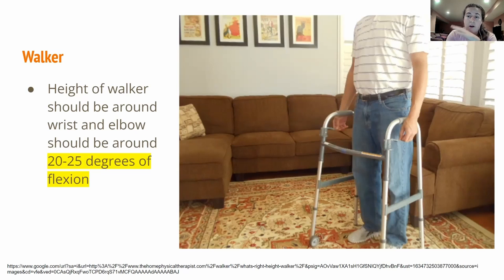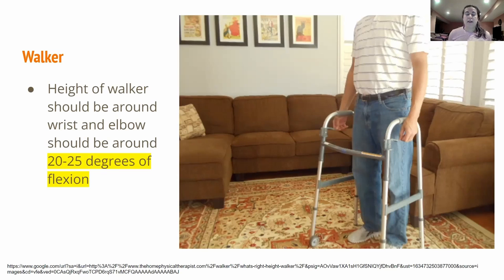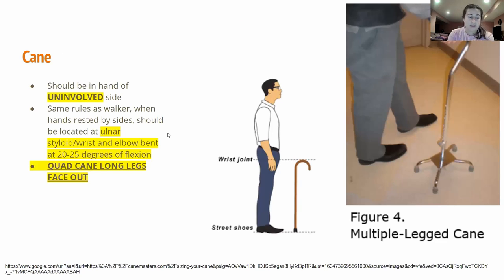For walkers, the height is set where the wrists naturally fall. Have the patient stand up to the best of their ability — many walker users are kyphotic — and the walker handle should fall around the ulnar styloid. As they grip the walker, the elbow should be at 20 to 25 degrees of flexion. More than that jams the shoulders and could cause impingement; less causes hunching, which creates postural problems.